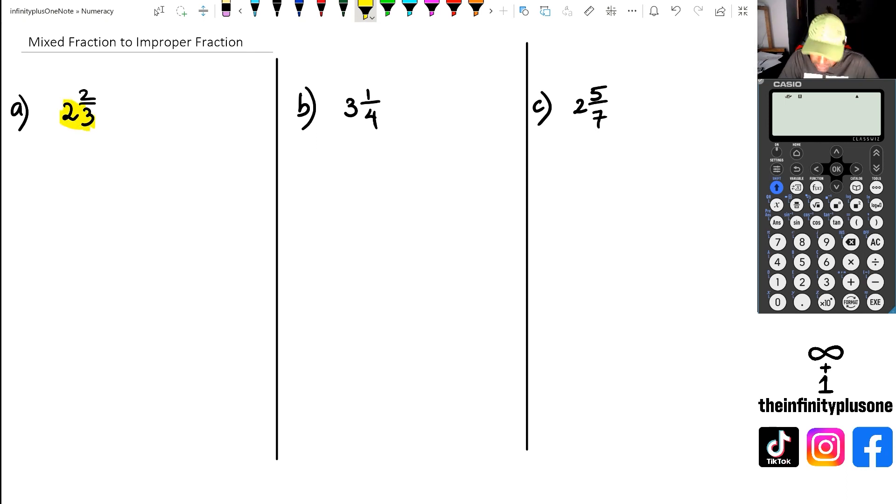We're going to do three times two plus whatever is in the numerator of that little fraction there, so we're going to go plus two. And when we do this, three times two is six, six plus two is eight. So in terms of going from mixed fraction to improper, we are going to write this as eight over three.